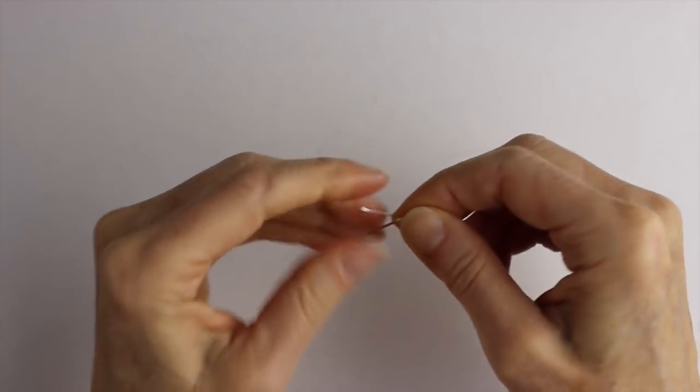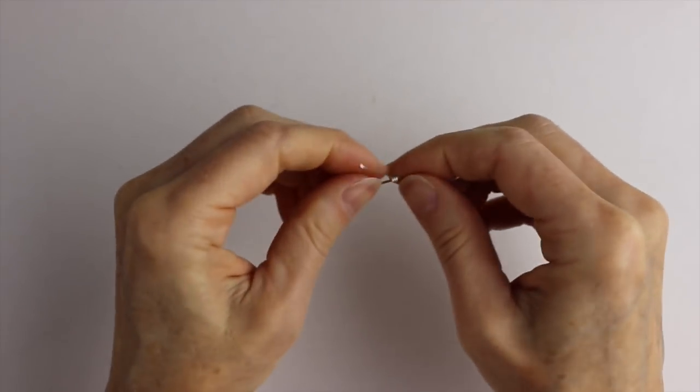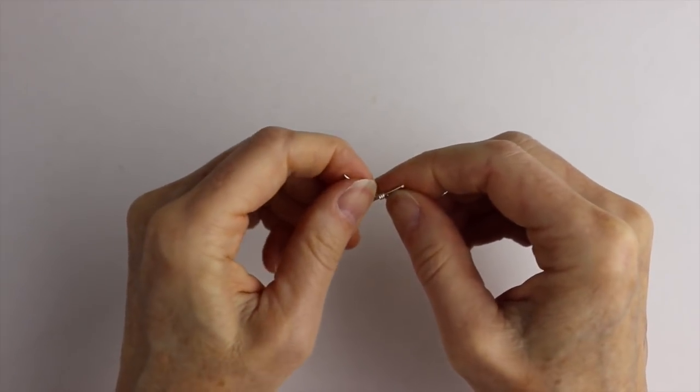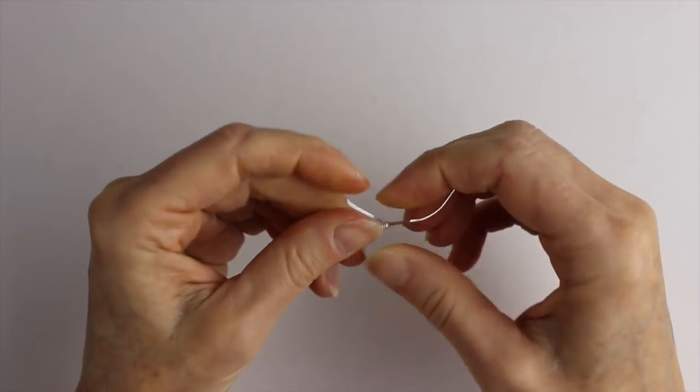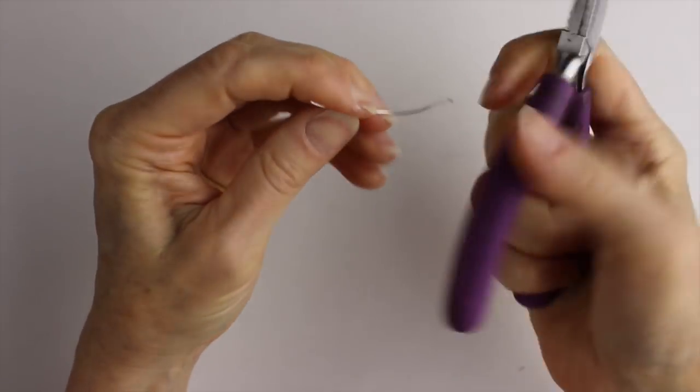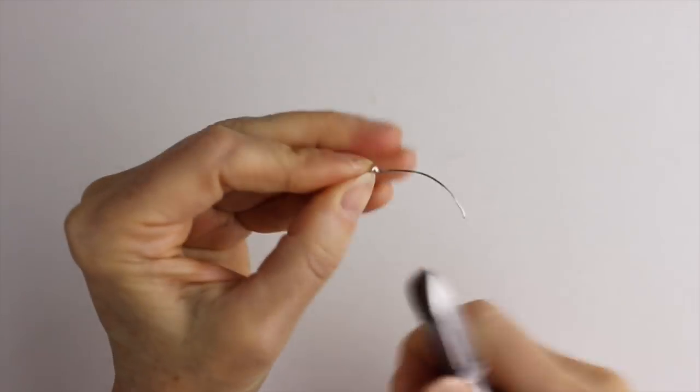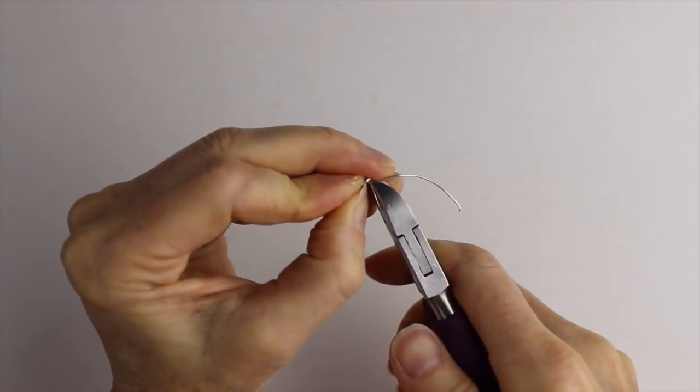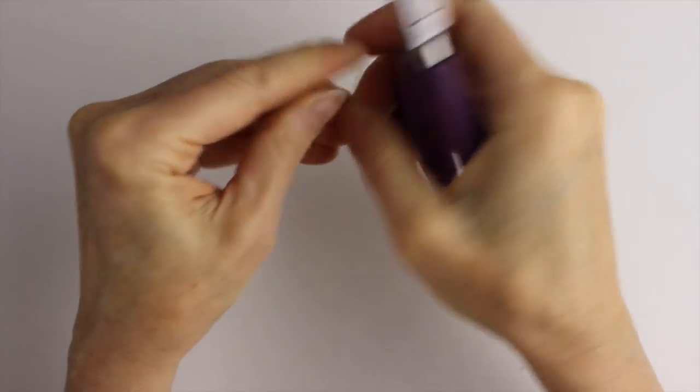This will actually hold the clasp and the split ring on. If you want a little bigger, you can even sort of back unwind it a little bit if you need to, but 20 gauge wire should do the trick for that. Then the same thing, we're going to cut the ends.